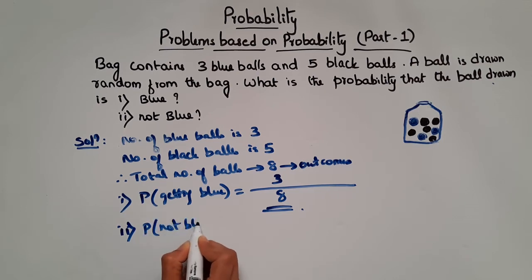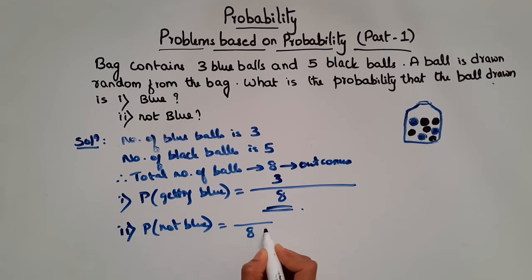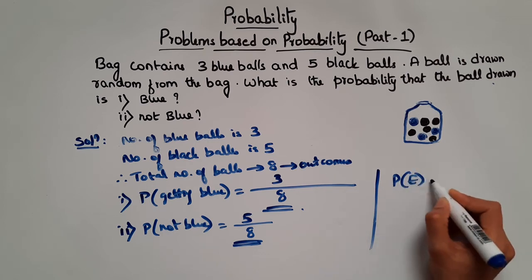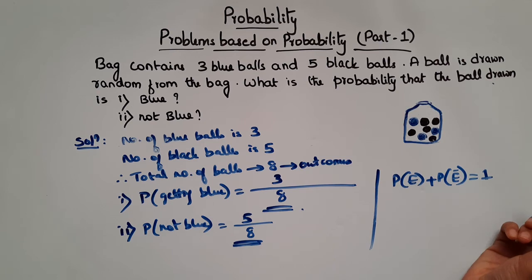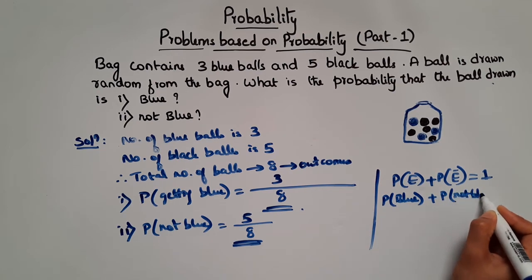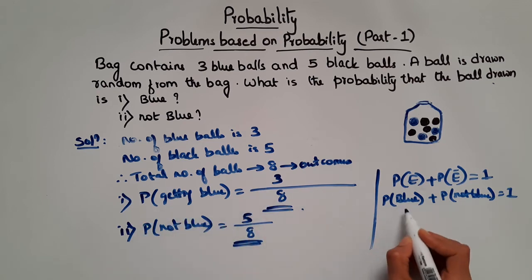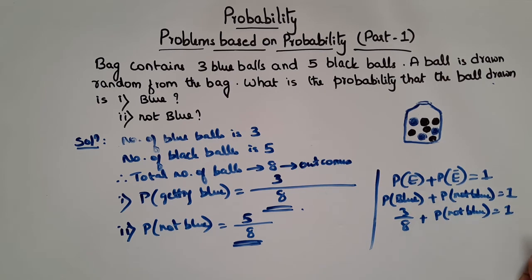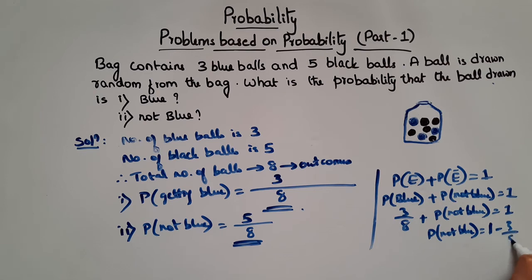Now what is the probability of getting not blue? Total possible outcomes is 8. If it is not blue it has to be black, and there are 5 black balls. So probability of getting not blue is 5 by 8. We can also use the formula: P(E) + P(not E) = 1. So probability of not blue equals 1 minus 3 by 8, which is 8 minus 3 by 8, equals 5 by 8.